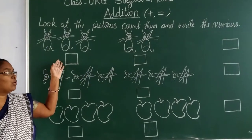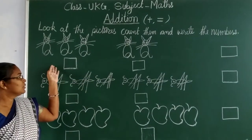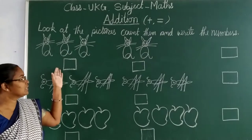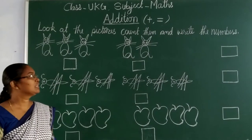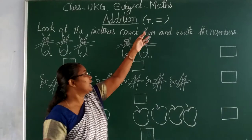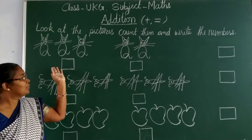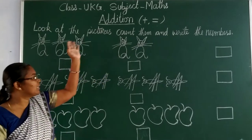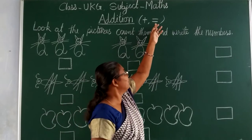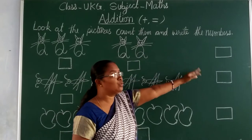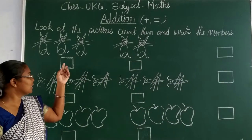In each row there are two groups and we have to count separately and write the numbers. Then we write the plus here. Plus means again both groups together we have to count and we put equal to and write the total number. Let us start.